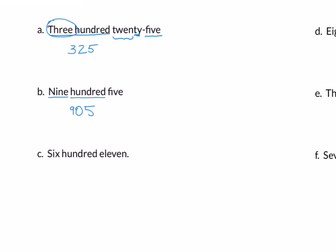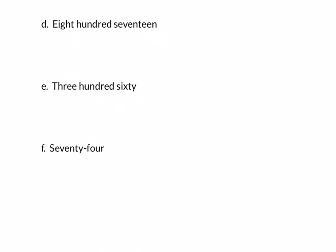Example c: six hundred eleven. Six goes in our left column. Remember that eleven is one of those special cases — it's just going to be 1-1. Example d: eight hundred seventeen. Eight goes in the left column. We have the suffix 'teen,' so we have a one in the middle column. This is seventeen, so it's written 8-1-7.